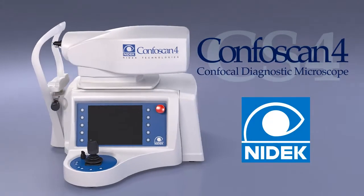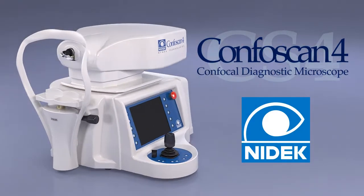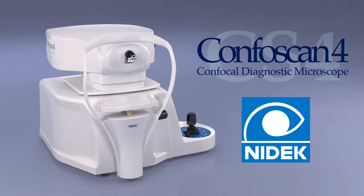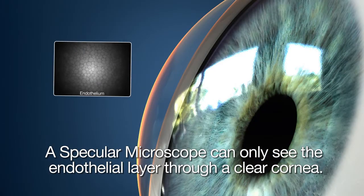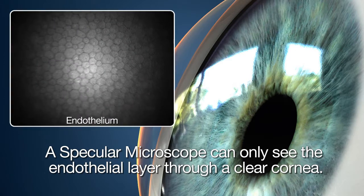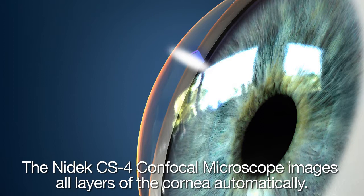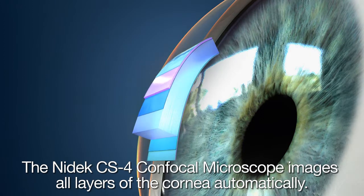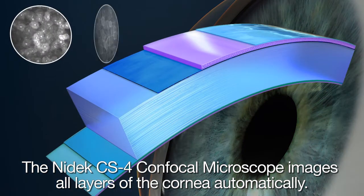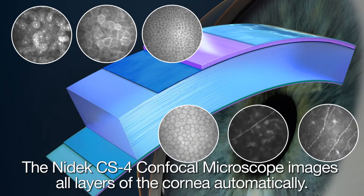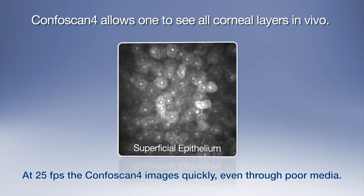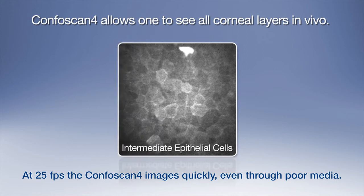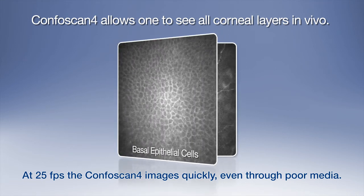NYDEC introduces the CONFOSCAN-4, a confocal digital microscope. While a specular microscope can only see the endothelial layer through a clear cornea, NYDEC's confocal microscope images all the layers of the cornea automatically. The CONFOSCAN-4 is a scanning slit microscope that allows one to see all the corneal layers in vivo.